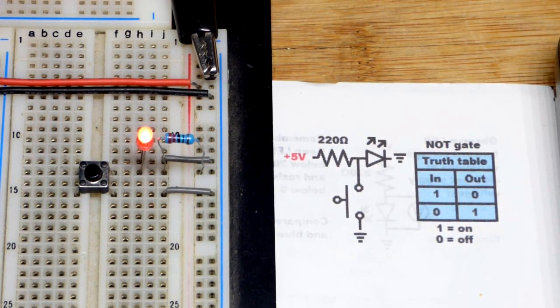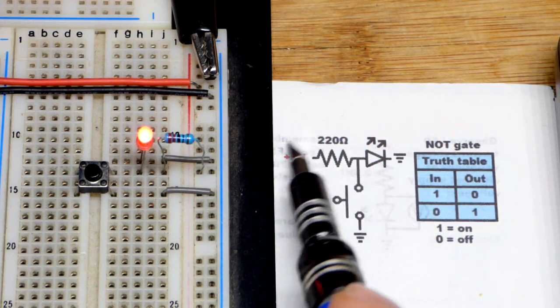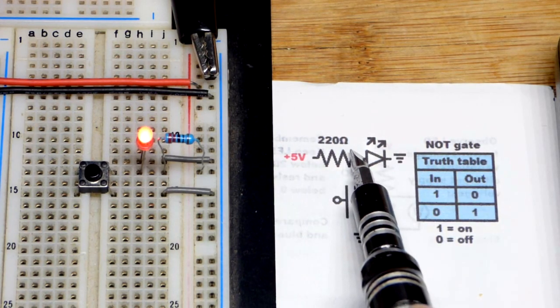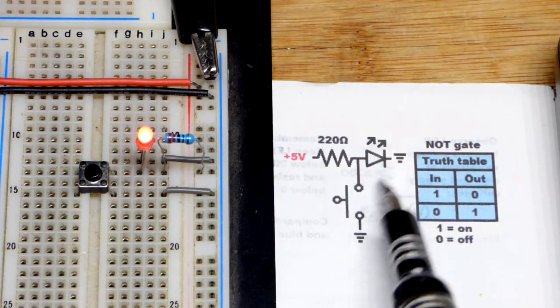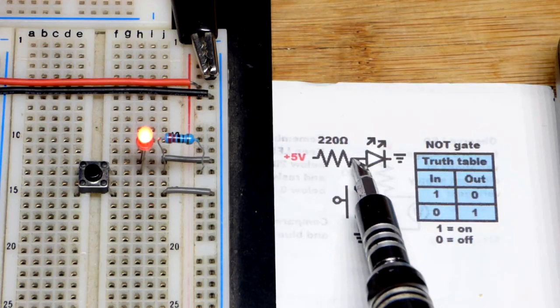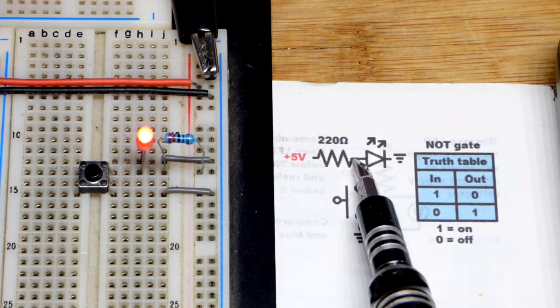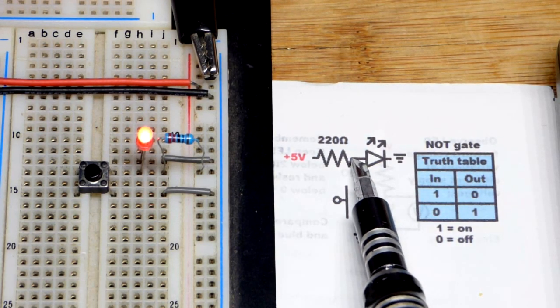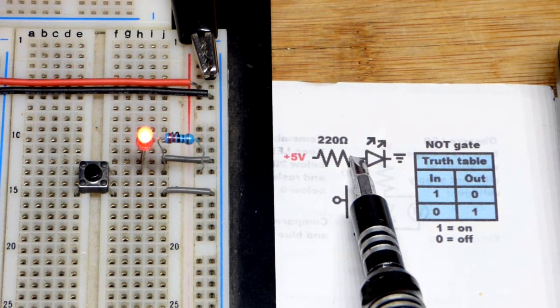So again, it'd be much better instead of this setup to have a high value resistor going to the base of a transistor that turns on and it connects the LED to the supply voltage. And then when you close the switch, that grounds the base if it's an NPN bipolar junction transistor or an N-channel MOSFET or something. It grounds the control pin of whatever transistor you're using if it's N-type.